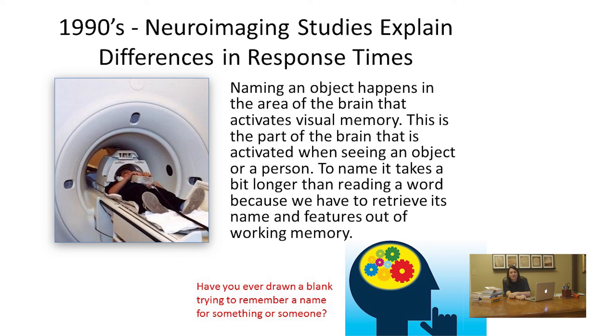In the 1990s and 2000s, neuroimaging experiments done with fMRI machines and other brain imaging techniques showed which parts of the brain were activated during reading tasks. This backed up Cattell's research. Naming an object happens in an area of the brain that activates visual memory — when we see an object or person, naming it takes longer because we have to retrieve the name and features out of working memory. Have you ever drawn a blank trying to remember someone's name? That feeling of having a name on the tip of your tongue is distressing.